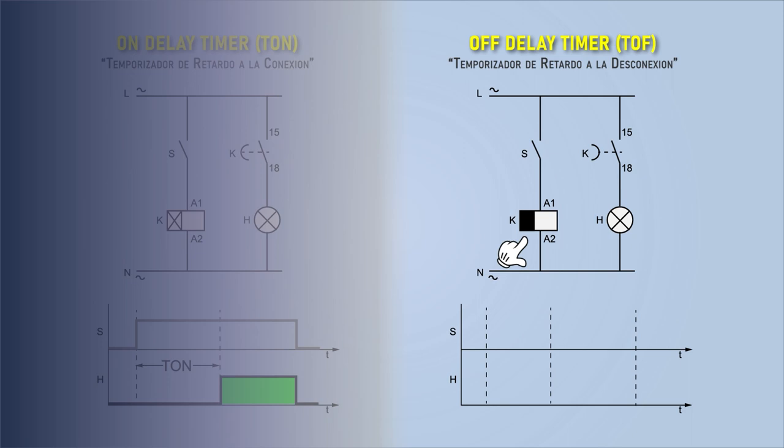This indicates that it is a timer with a disconnection delay. Its corresponding contact is 1518, which will return to its default state after the delay set and the timer has expired.